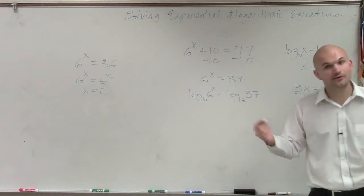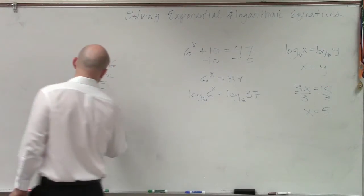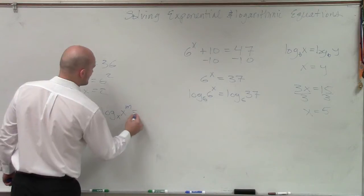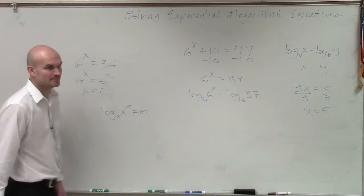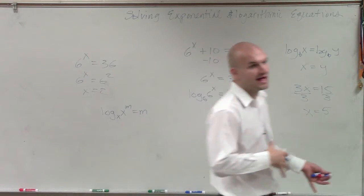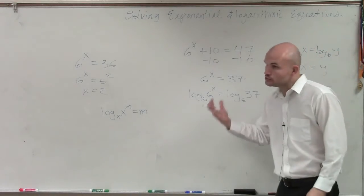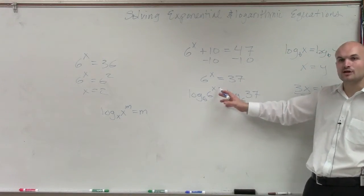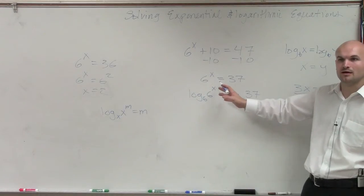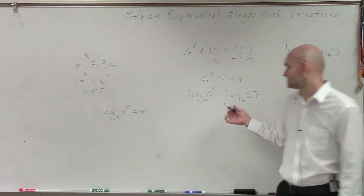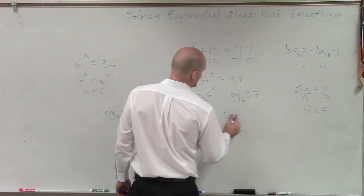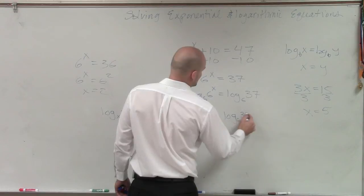So then it goes to my other property of logarithms. Remember, if I have log base x of x raised to the m, that just equals m. Remember we talked about that in evaluating? So if I choose to use log base 6 of 6 raised to the x, I know that's now just going to equal x. So now I have x equals log base 6 of 37.